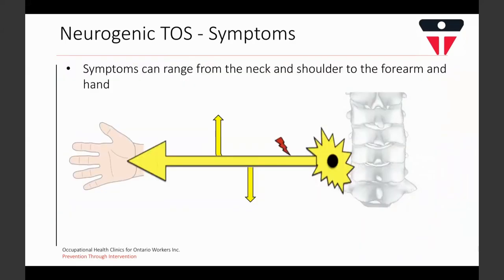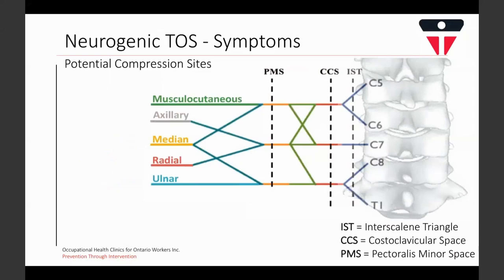What we see happening involves the brachial plexus, with nerves coming off the spinal cord from the C5 to T1 levels and feeding into the shoulder area. Impingement can happen at the interscalene, costoclavicular, or pectoralis minor space, and where that impingement is occurring determines which nerve is being affected and where symptoms are experienced.